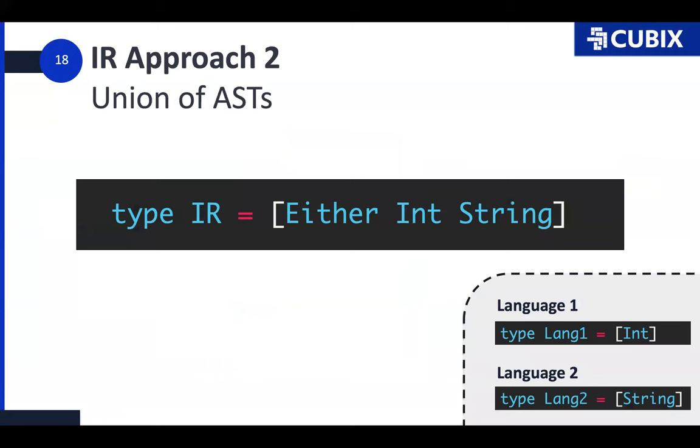The other approach to building intermediate representation is the union of ASTs approach, which I'll, funny enough, like to call the Clang approach. So in this case, language one has ints, language two has strings. So you get a list of either int and string. It can represent programs of any language. Unfortunately, it can also represent lists that have ints and strings, which are not valid in either language. And you tend to confuse languages when you do this. And also, you're kind of not really writing multi-language anymore.